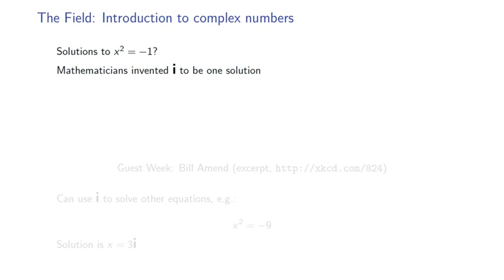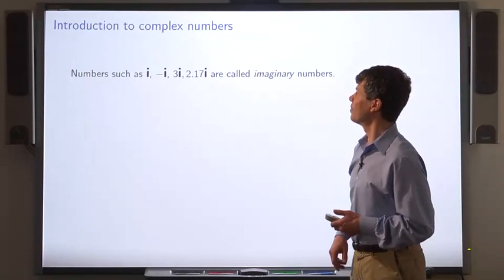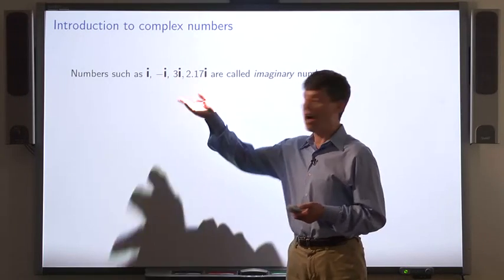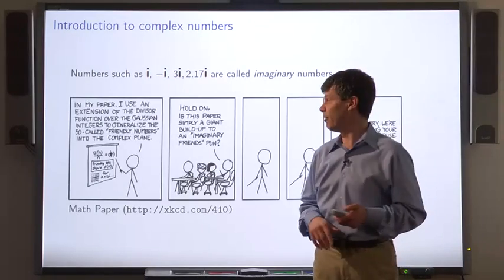Mathematicians invented i to be one solution. You can use i to solve other equations. For example, x squared equals minus 9, the solution is 3 times i. Now, numbers such as i, minus i, 3 times i, and so on, are called imaginary numbers.